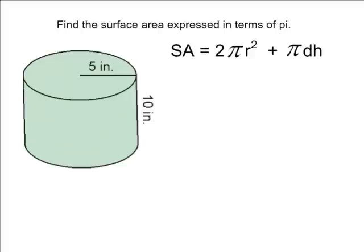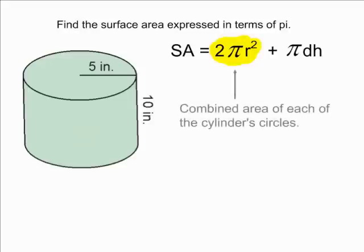The first part of our formula, 2πr², will find the combined area of each of the cylinder circles.